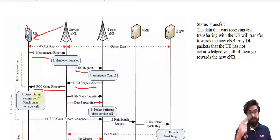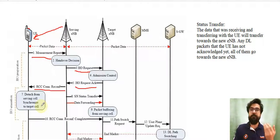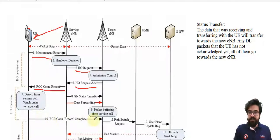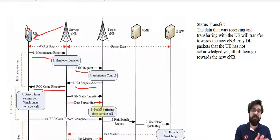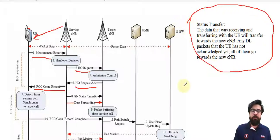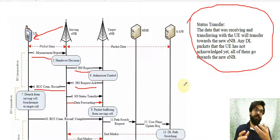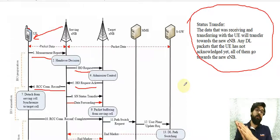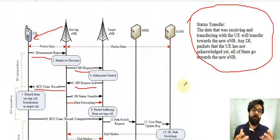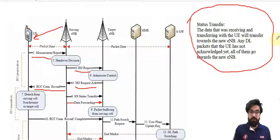The UE tries to detach from the serving cell and make the RRC connection via random access — there's a video on the channel about that. So the UE performs the RRC connection. In the meanwhile, the UE sends the attach request towards the target eNodeB, and the serving eNodeB does a status transfer. Whatever data has not been acknowledged yet — maybe you have an active connection and are using data — the serving eNodeB forwards all of it towards the new target eNodeB. We call that data forwarding or status transfer.